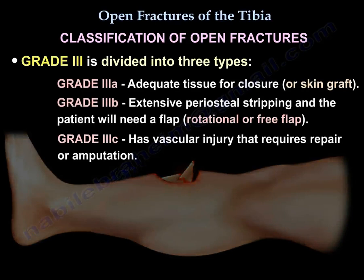In Grade 3A, there is adequate tissue for closure. In Grade 3B, there is extensive periosteal stripping and the patient will need a flap — either a rotational flap or a free flap. Grade 3C involves a vascular injury that requires repair or amputation.